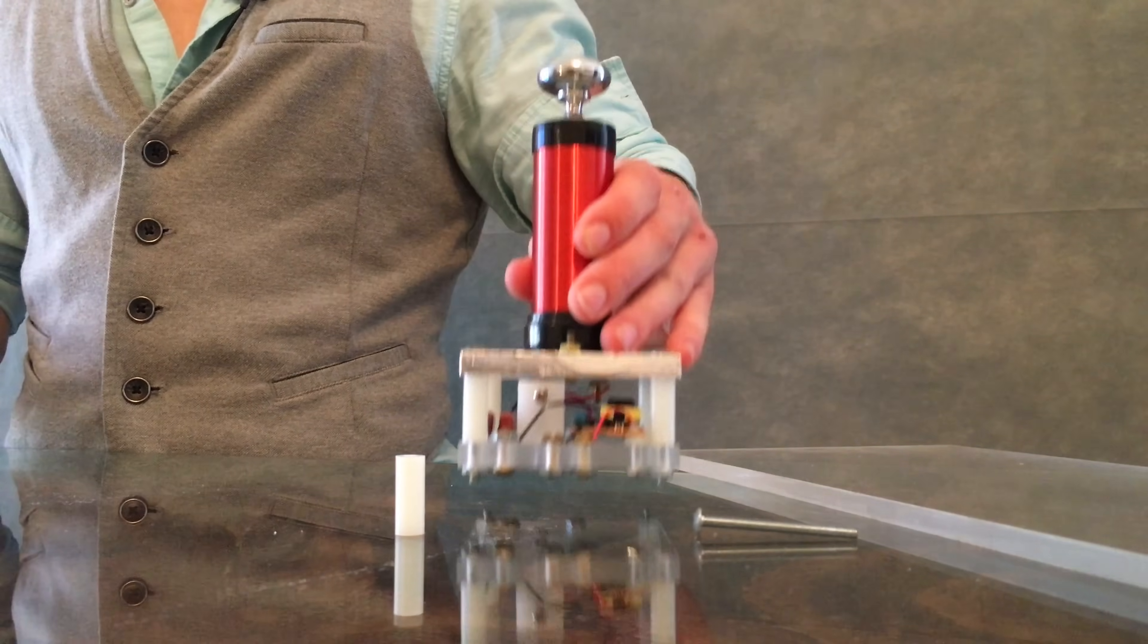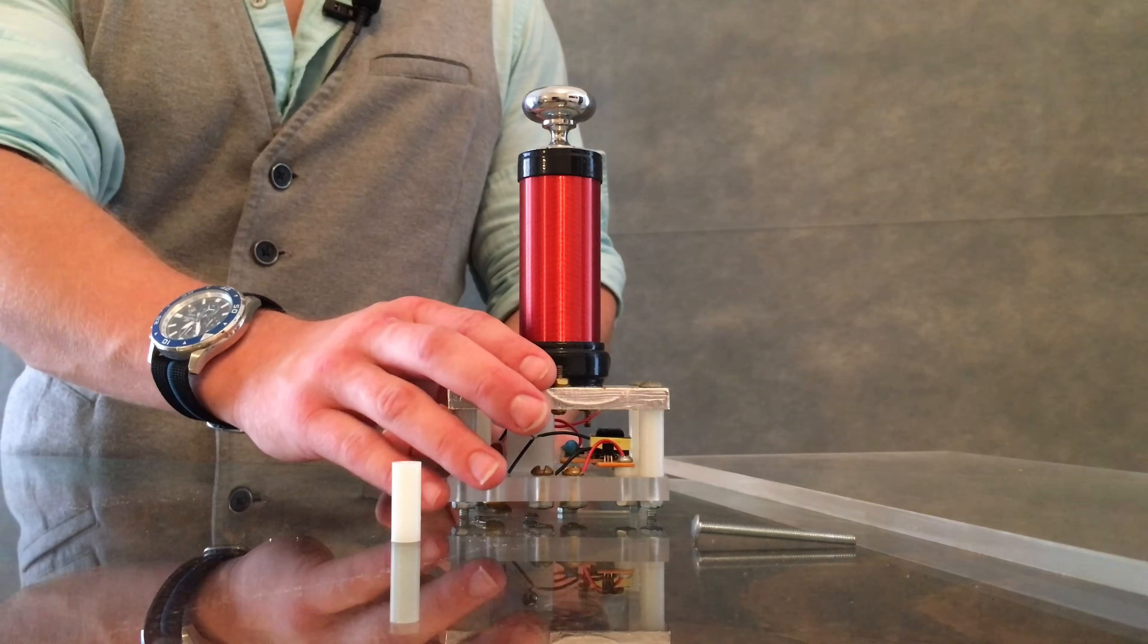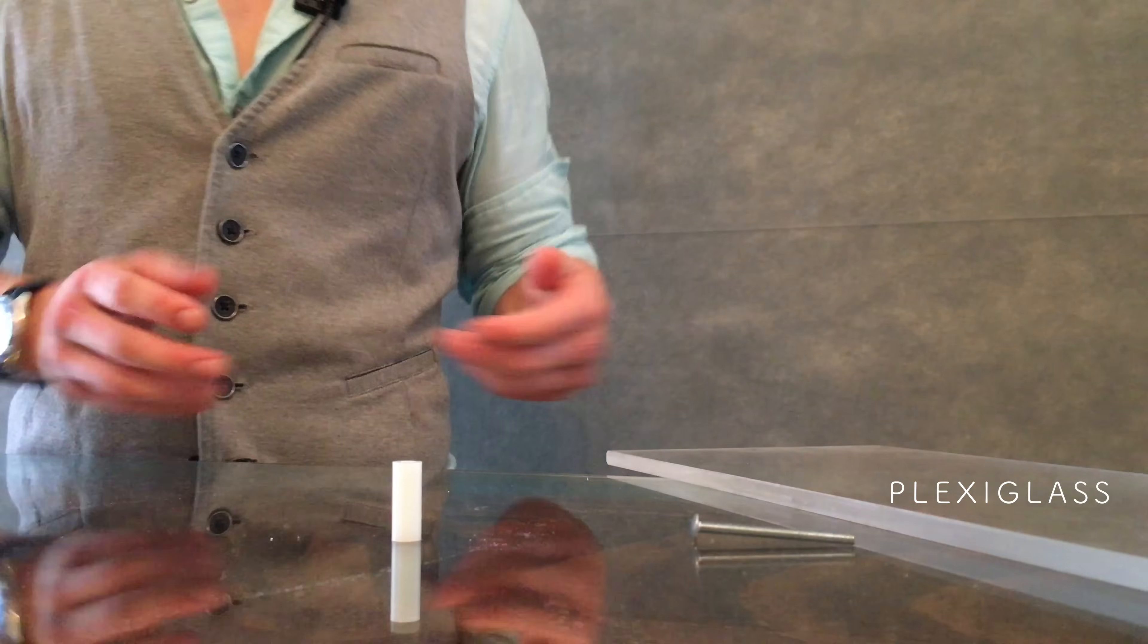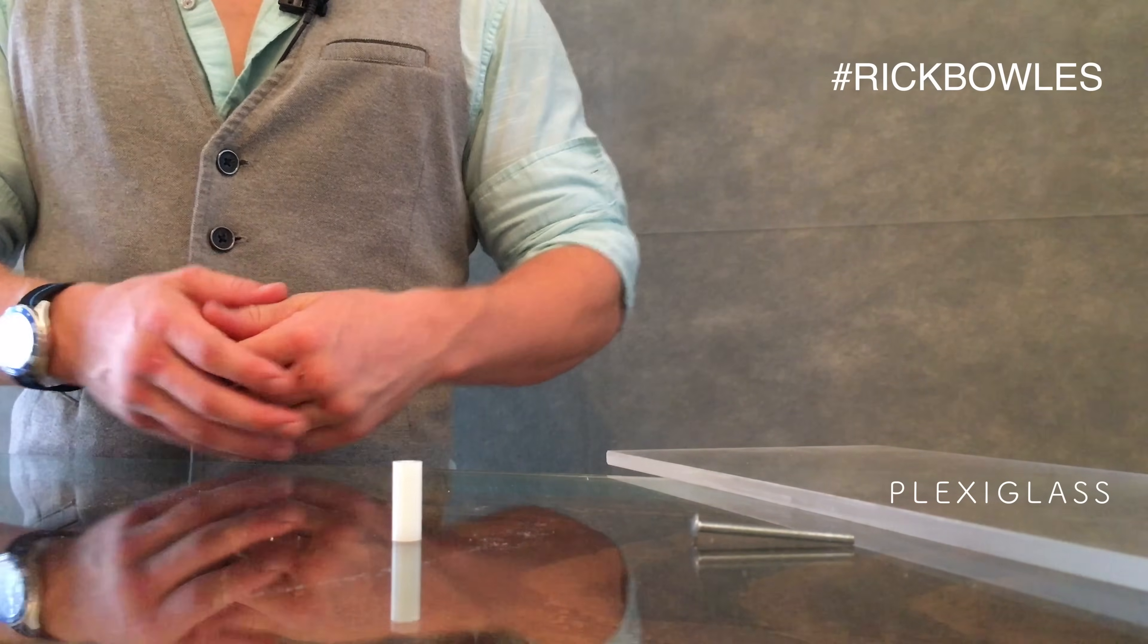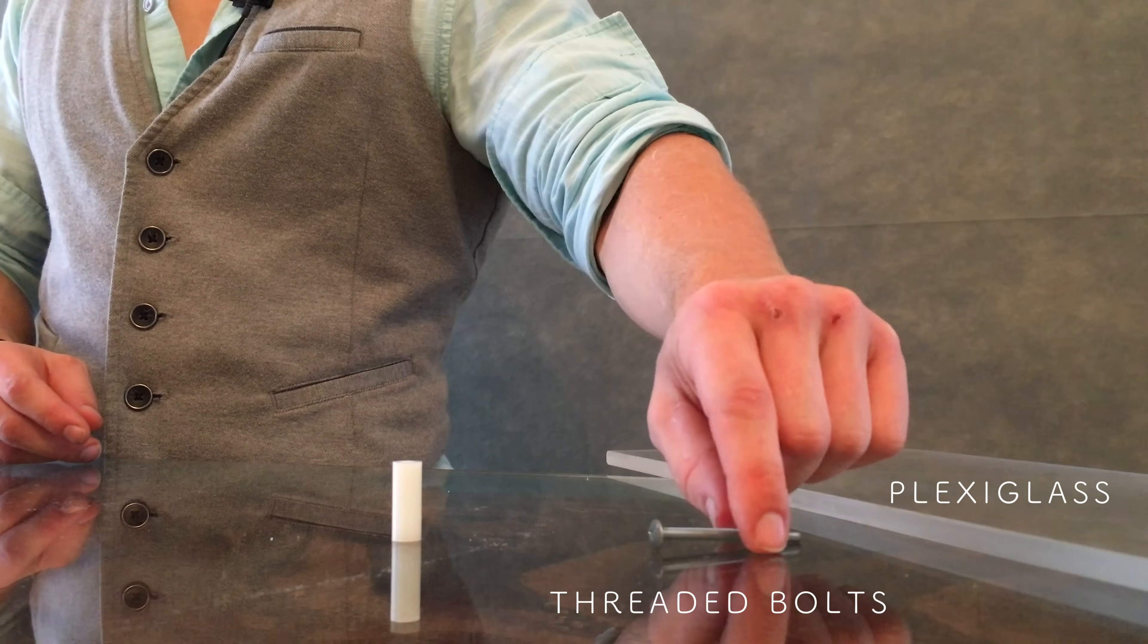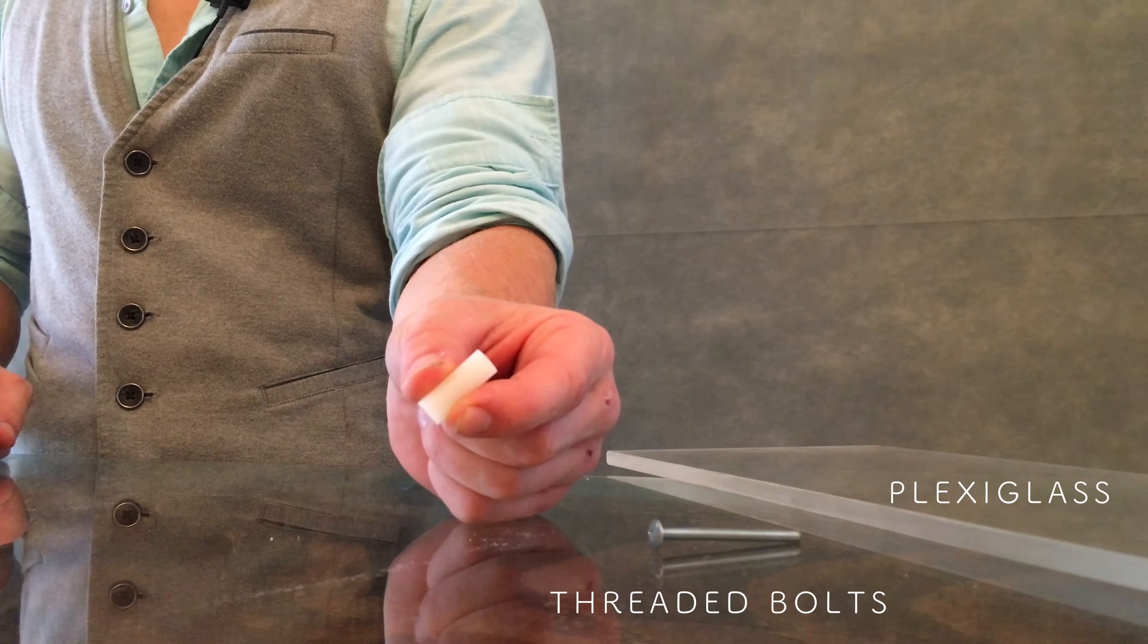But we want our coil to look nice so we're going to need some separate supplies for the base. Go out and find yourself some quarter inch plexiglass or you can use some nylon cutting board. Grab yourself four two inch long bolts and with that four one inch long nylon spacers.